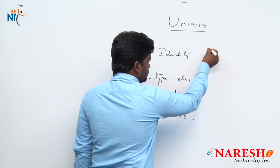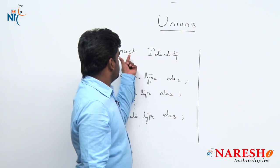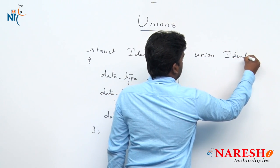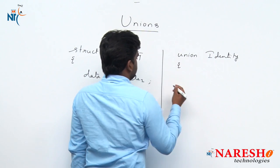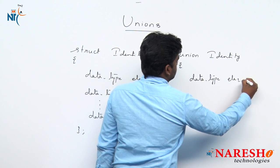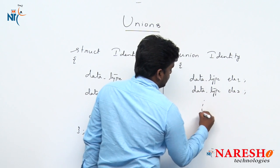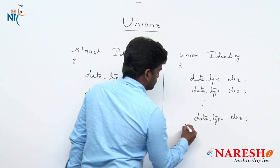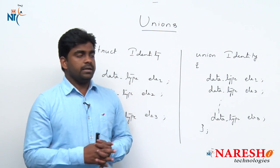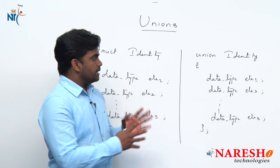Now with the help of structure, we can easily write the syntax of union. Just in place of the struct keyword, you can write the union keyword. Union is also having an identity, and inside it has different data types — element 1, element 2, element 3, and so on. So the syntax of structure and the syntax of union are looking the same.